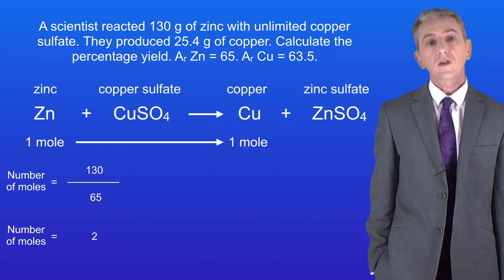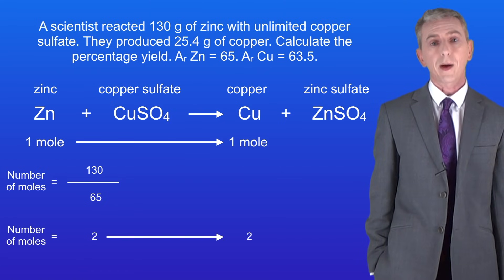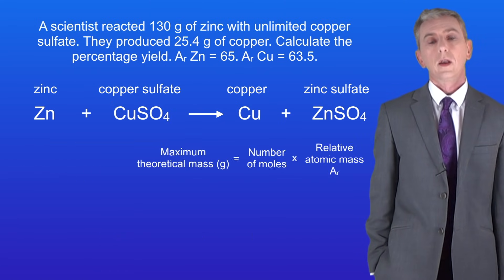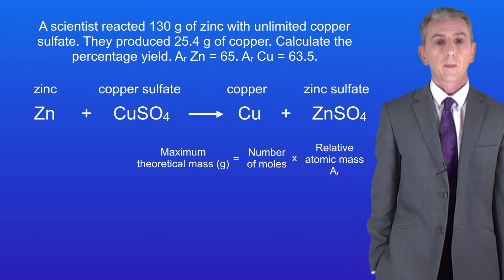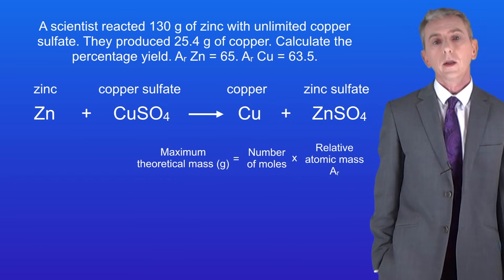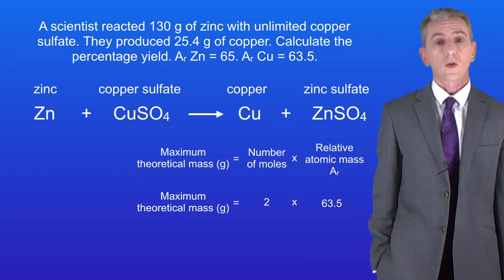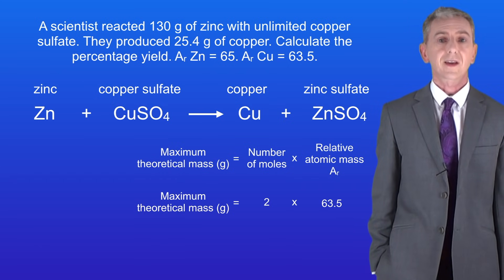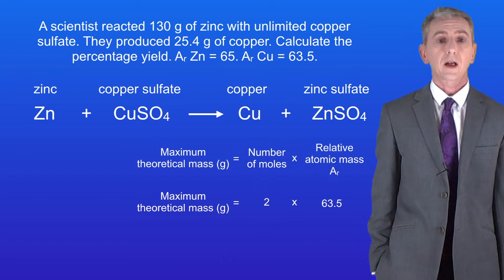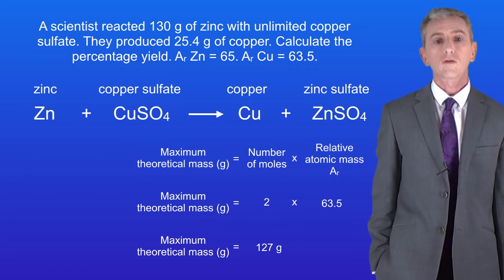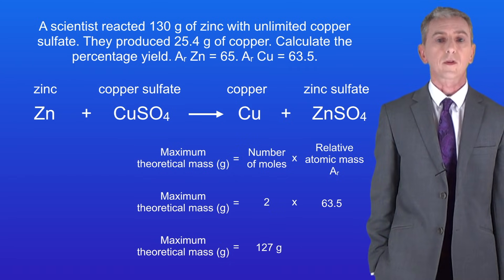This means that we could produce two moles of copper atoms. So the maximum theoretical mass of copper that we could produce is the number of moles multiplied by the relative atomic mass of copper. Two moles multiplied by 63.5 gives us a maximum theoretical mass of 127 grams of copper.